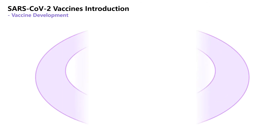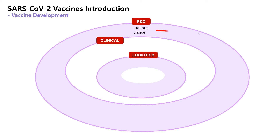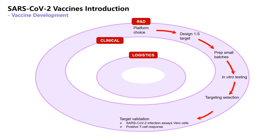Generally, the vaccine development process is divided into three stages: research and development, clinical testing, and transportation. The stages of the development process include platform choice, design of 1 to 5 targets, prep small batches, in vitro testing, targeting selection, and target validation. The last stage is preclinical testing in cell culture and in animals.